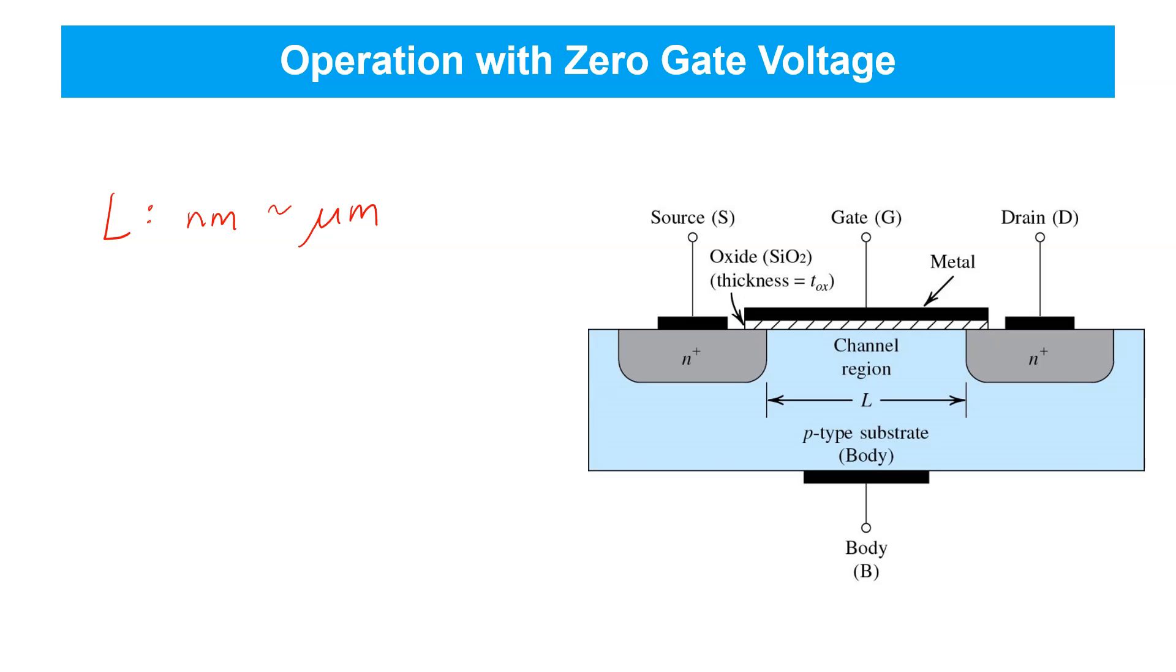The channel width is the dimension into the screen in this cross-section. It's represented with the symbol W, typically. Typical values for channel width are in the range of tens of nanometers up to hundreds of micrometers. Of course, there's quite a bit of variation in these values.